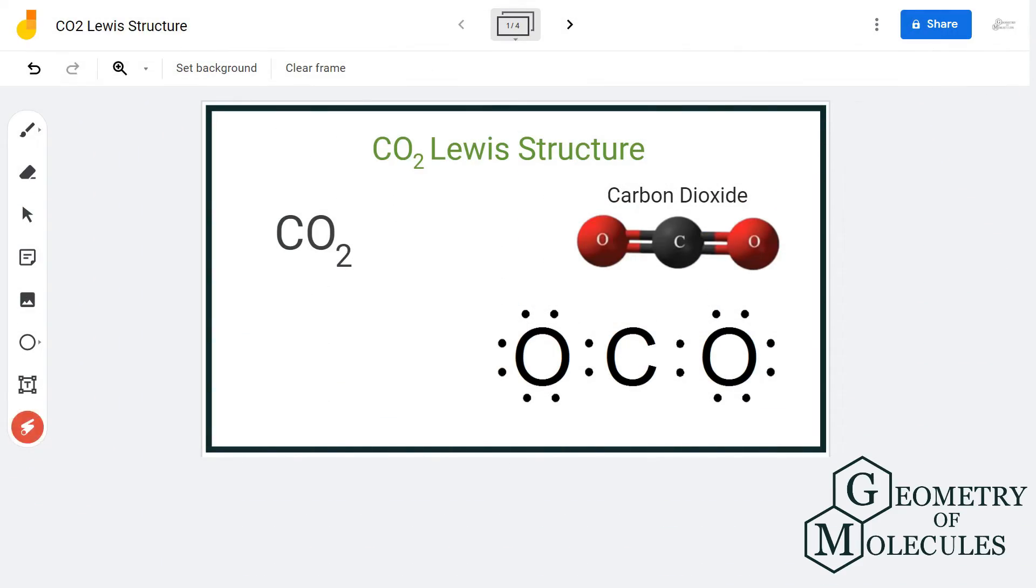Hi guys, in this video we are going to look at the Lewis structure of carbon dioxide. It has a chemical formula of CO2 and is made up of two types of atoms: carbon and oxygen.